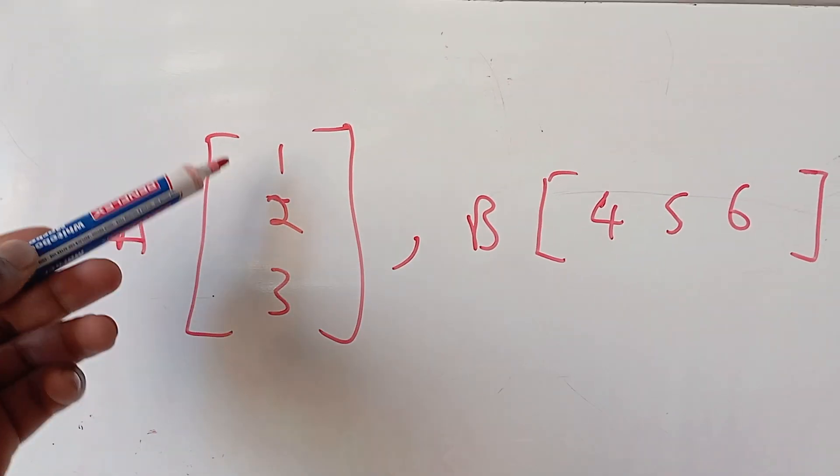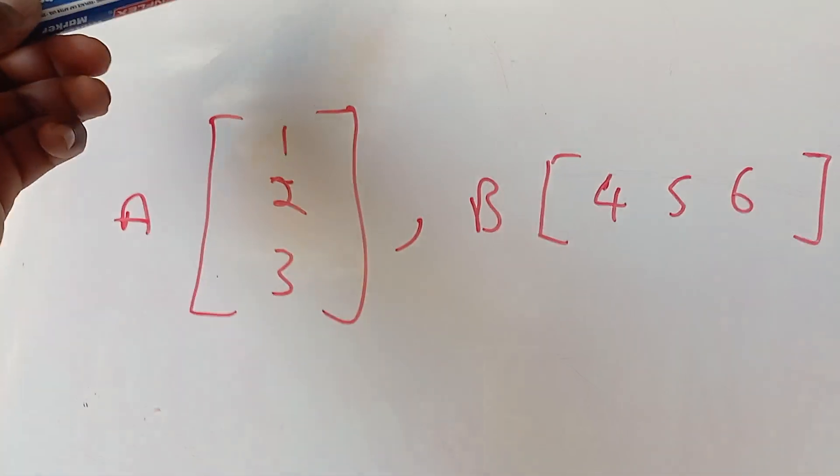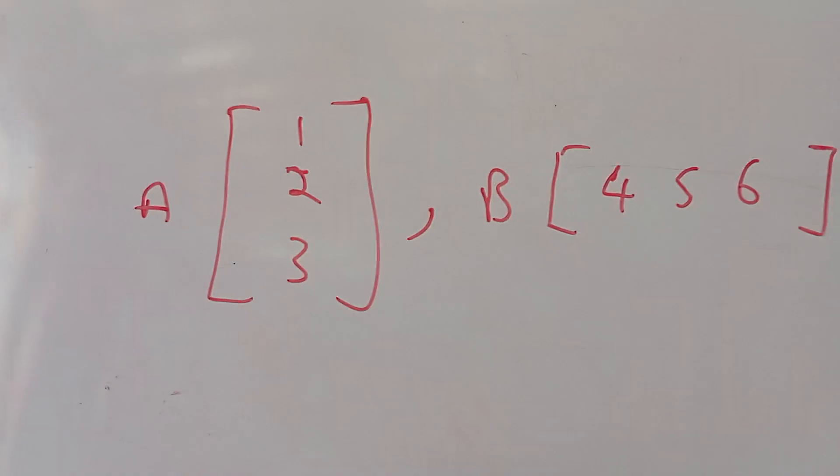Which means how many rows do we have? 1, 2, 3, and 1 column - a 3 by 1 matrix.